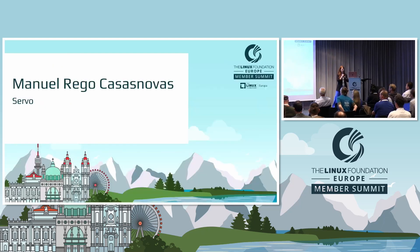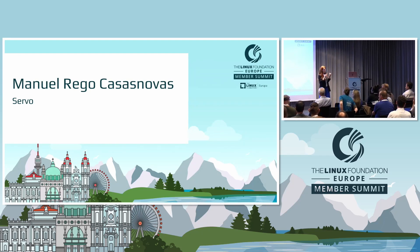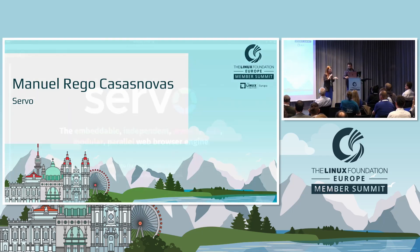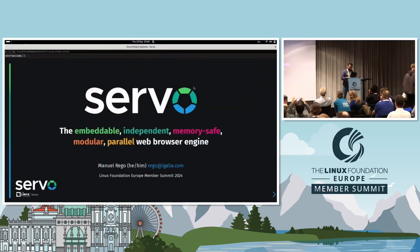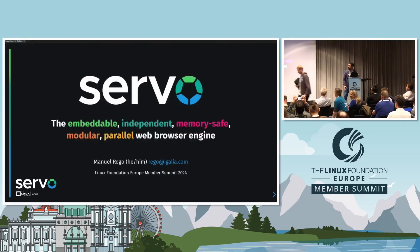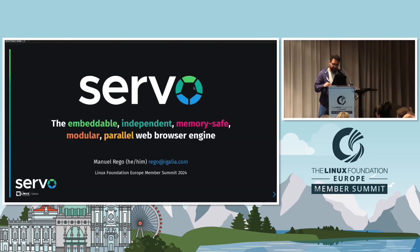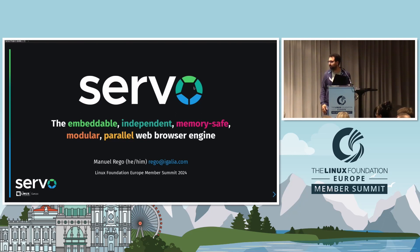Welcome to the stage Manuel Rego, who's going to present his project on Servo. So this is Servo — basically the mini browser we have. For those that don't know the project, Servo is an independent, memory-safe, modular, parallel browser engine. You could think of it like Chromium or WebKit or Gecko. Servo is written in Rust, where we have lots of experience with the web platform.